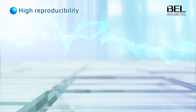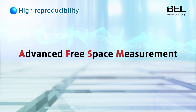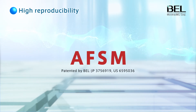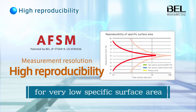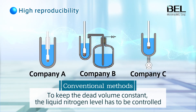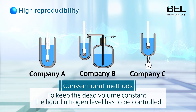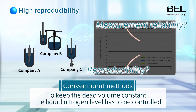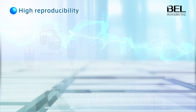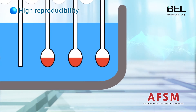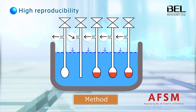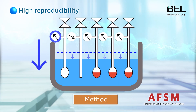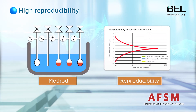The patented Advanced Free Space Measurement, or AFSM, is our cutting-edge technology. High accuracy and reproducibility can be achieved for very low specific surface areas. Conventional liquid nitrogen level control has accuracy and reproducibility issues. Our advanced free space measurement avoids this problem by compensating for the change in the free space in the sample cell due to liquid nitrogen level changes. The free space change in the sample cell can be corrected continuously from the pressure change in the reference cell.